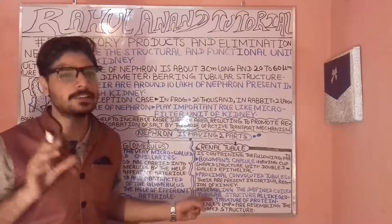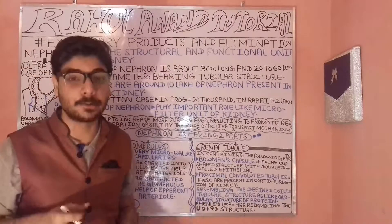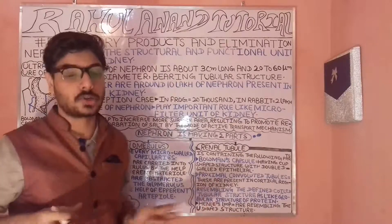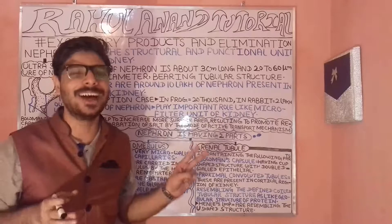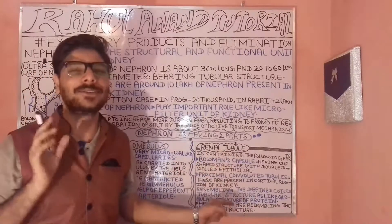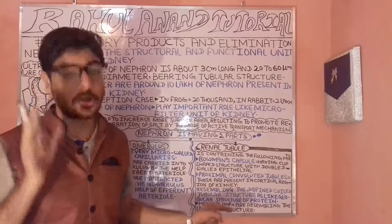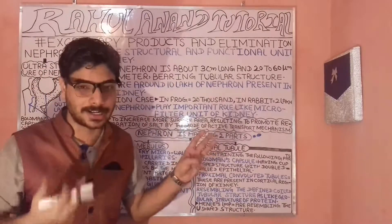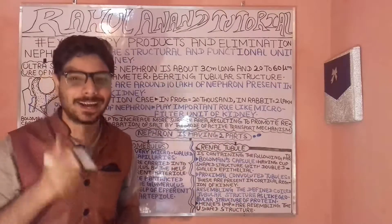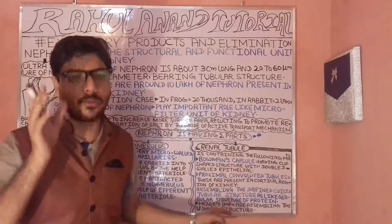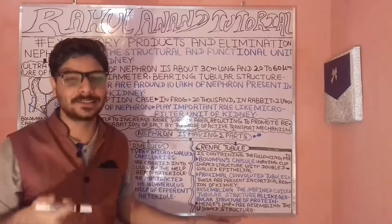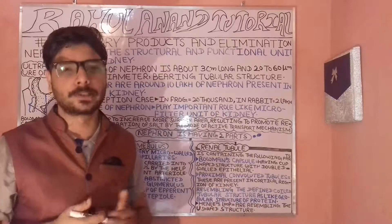Now let's look at the second part — the renal tubules. These are the second most important part of the nephron. The renal tubules have the following parts: the Bowman's capsule, the proximal convoluted tubules (PCT), and the loop of Henle.